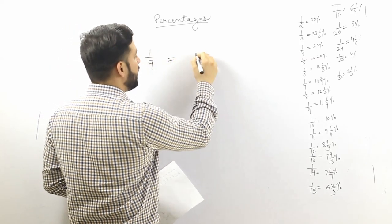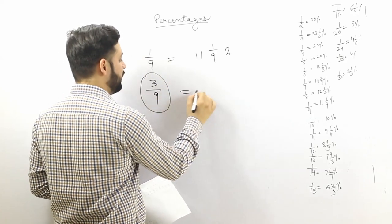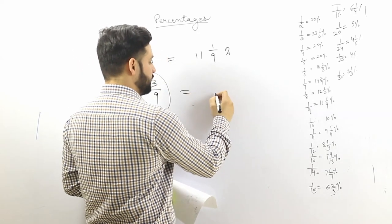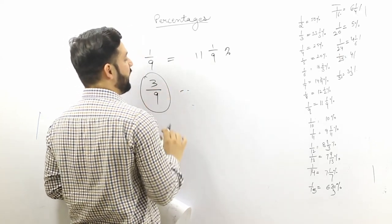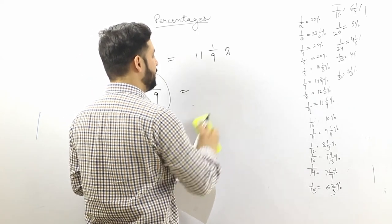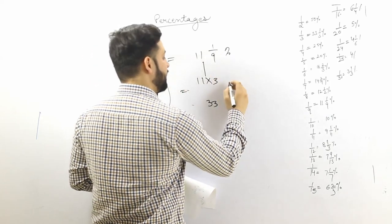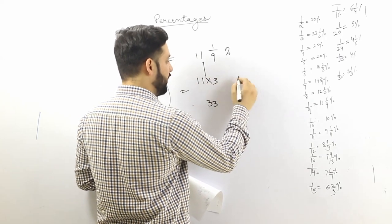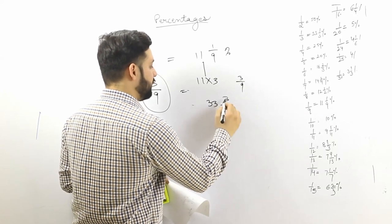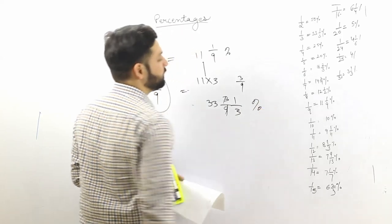The value of 1/9 equals 11 and 1/9 percent. Now, what is the value of 3/9? We already have 1/9 = 11 and 1/9 percent. We multiply 11 by 3 to get 33, and multiply the numerator 1 by 3 to get 3/9. So the answer is 33 and 1/3 percent.